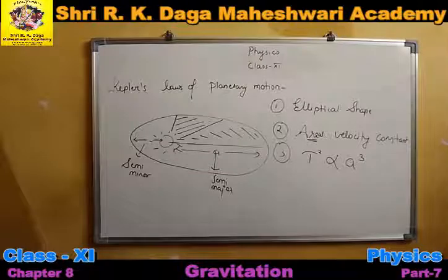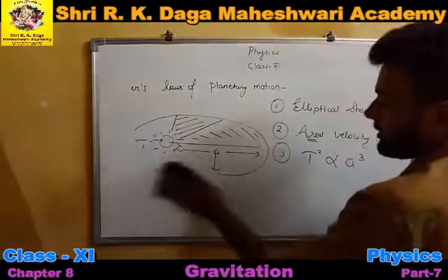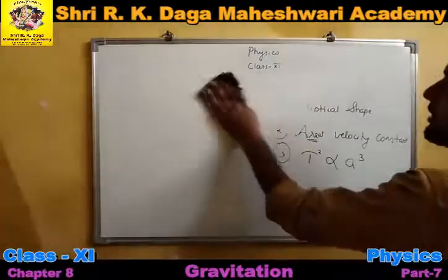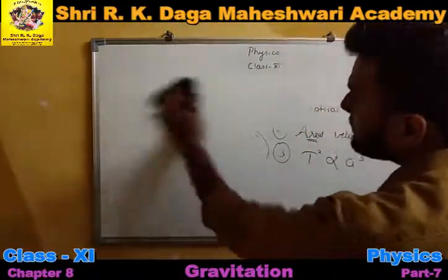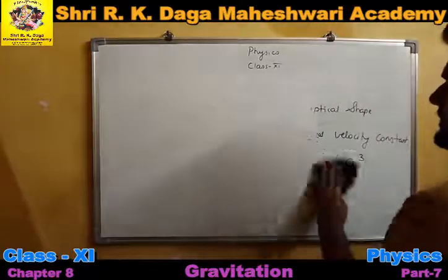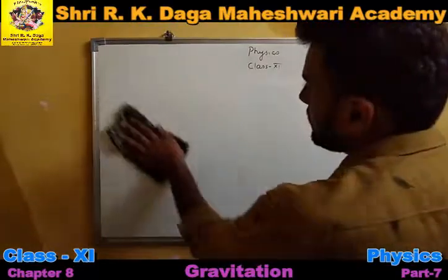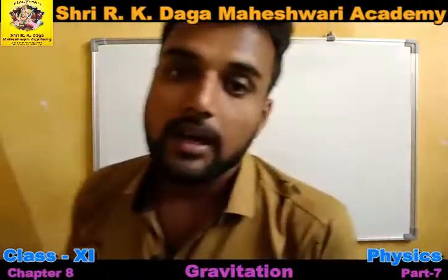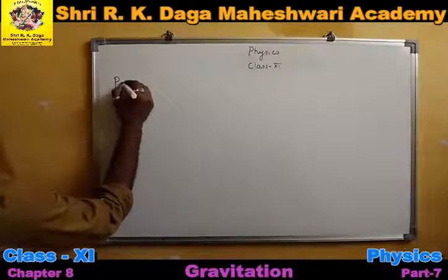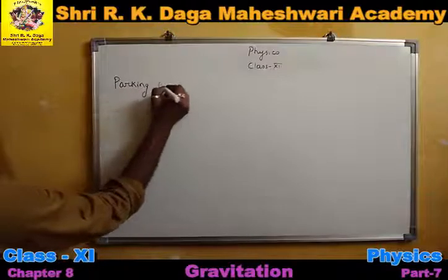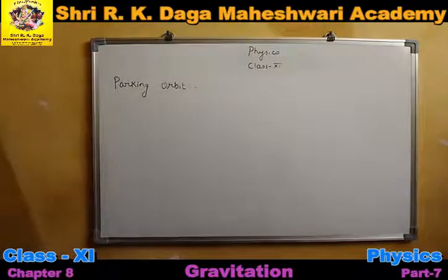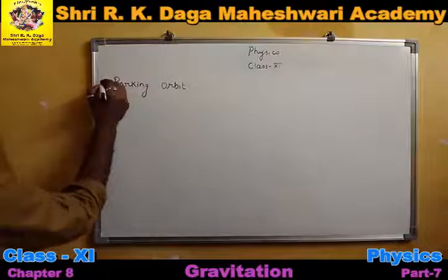The next and last topic of the chapter is the parking orbit. From the word 'parking' we understand an area where we can park our vehicle. Similarly, the parking orbit is the orbit in which any country can launch its satellite — that orbit is called the parking orbit.